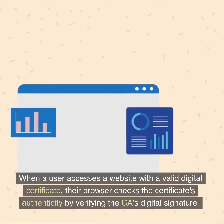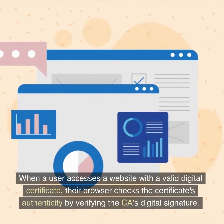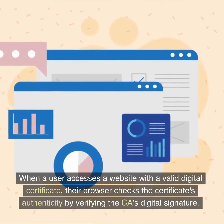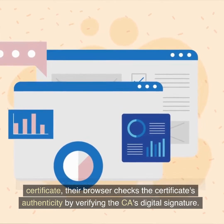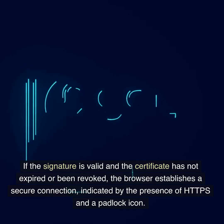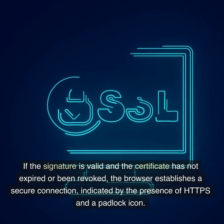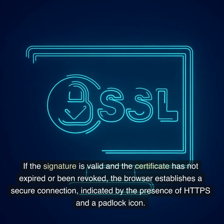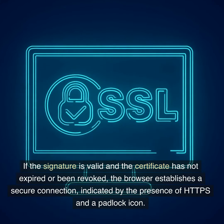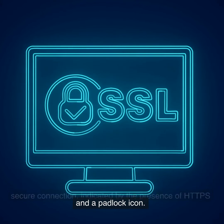When a user accesses a website with a valid digital certificate, their browser checks the certificate's authenticity by verifying the CA's digital signature. If the signature is valid and the certificate has not expired or been revoked, the browser establishes a secure connection, indicated by the presence of HTTPS and a padlock icon.